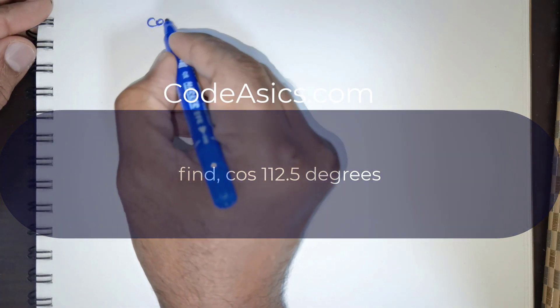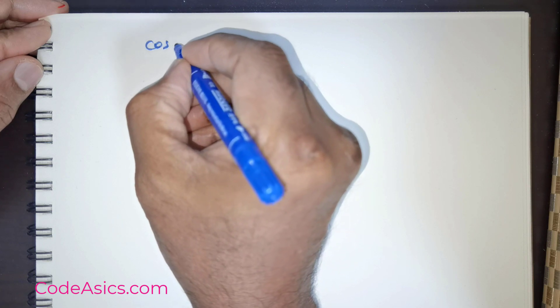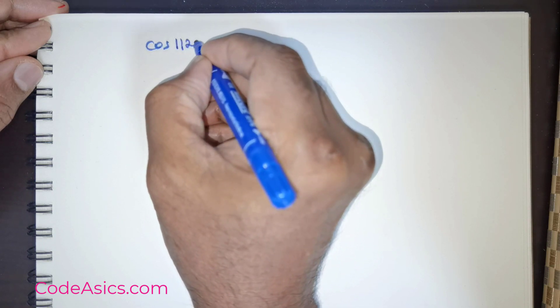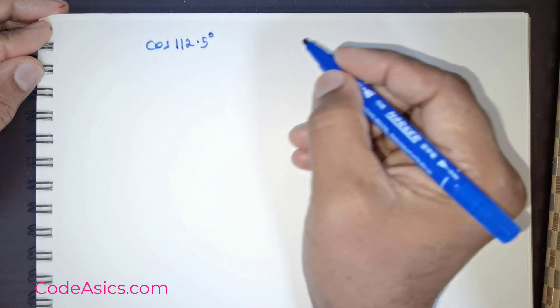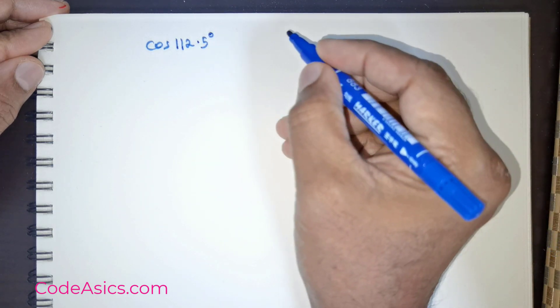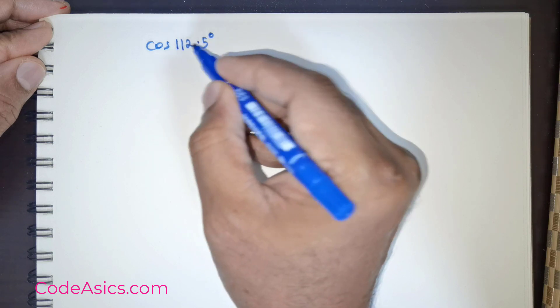Students, we got a good question. We are expected to find the value of cos 112.5 degrees, right? So how are we going to do this?